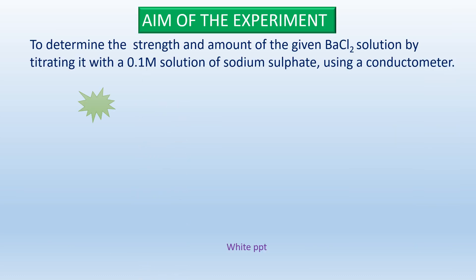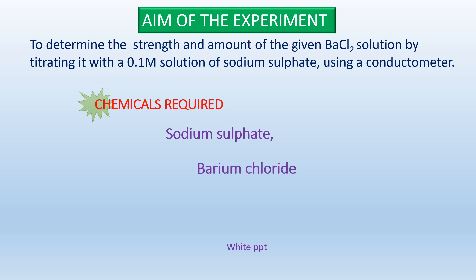The aim of the experiment is to determine the strength and amount of a given barium chloride solution using 0.1 molar sodium sulphate with the help of a conductometer. The chemicals required are sodium sulphate and barium chloride.